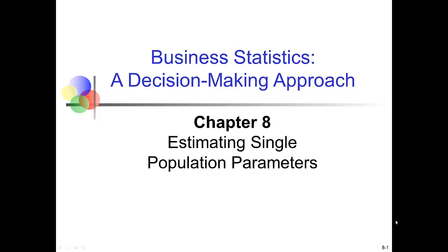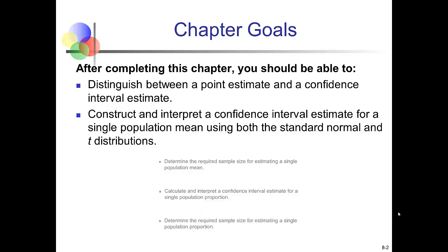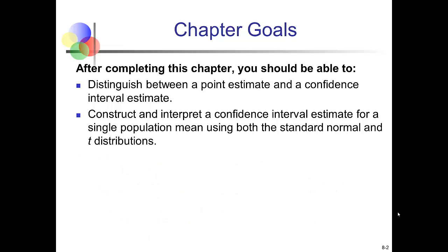In this video, we'll discuss Chapter 8, Section 1, Estimating a Single Population Mean. We'll start by focusing on the difference between a point estimate and a confidence interval estimate, and then we'll construct confidence intervals and interpret those for a single population mean, using both the standard normal distribution and the T distribution.